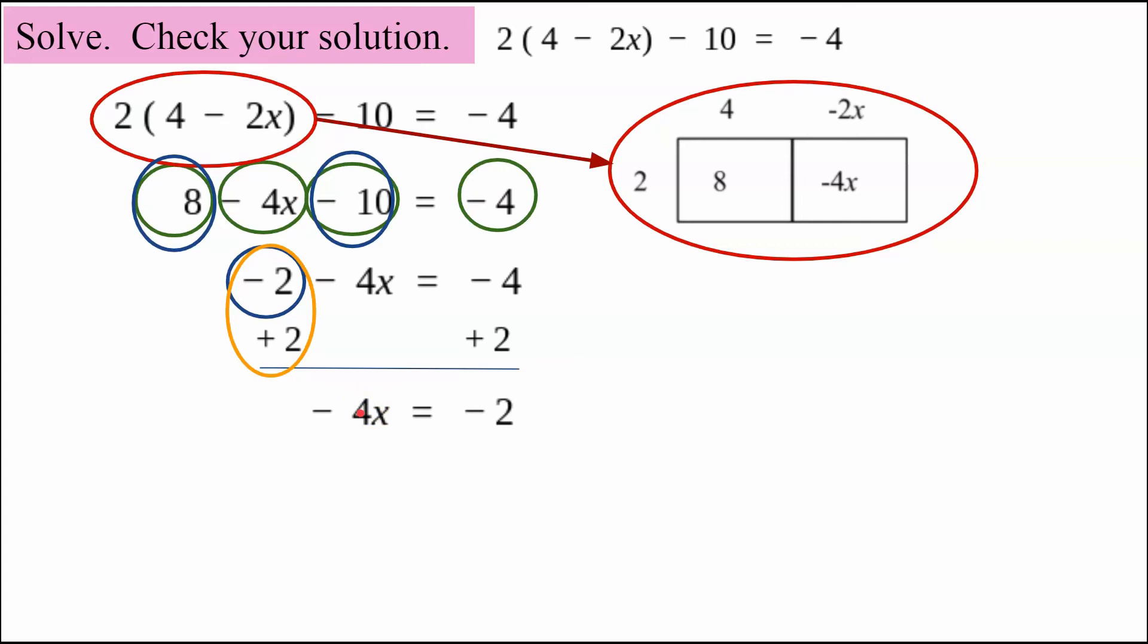The inverse of multiply is to divide. So I'm going to divide both sides of this equation by negative 4. Do the math. Negative 4 divided by negative 4 is 1. Remember that coefficient of x is 1.